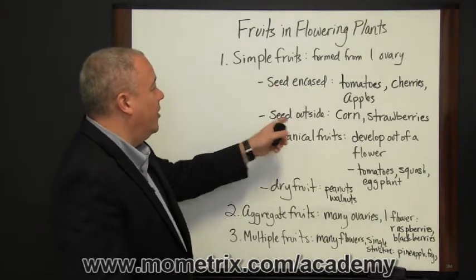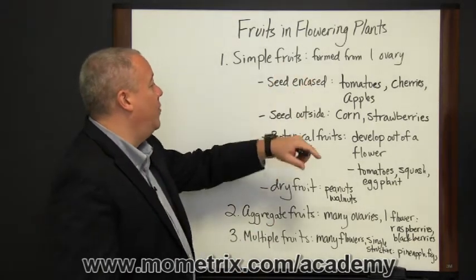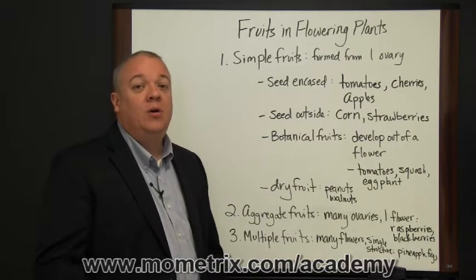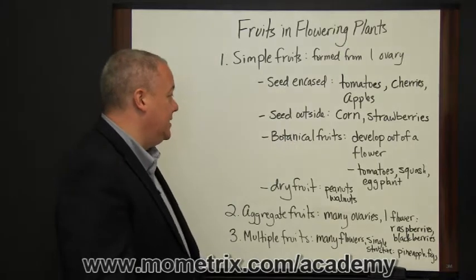Also within this category, you can have the seeds on the outside. It's still a simple fruit from one ovary, but the seeds are on the outside. Things like corn and strawberries would be examples of simple fruits with the seeds on the outside rather than encased.